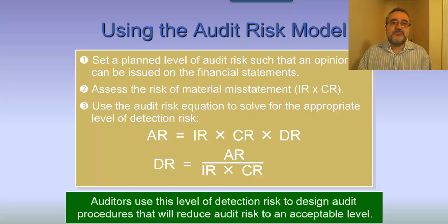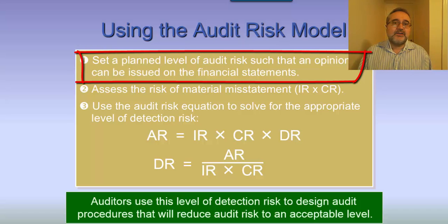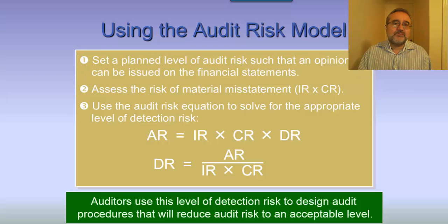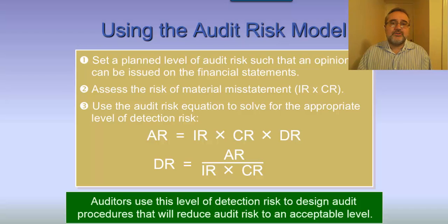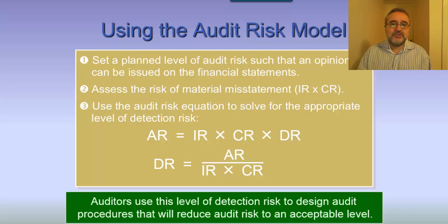From the audit risk model, what we are interested in doing is setting a planned level of audit risk such that an opinion can be issued on the financial statements. We are initially assessing the risk of material misstatement through inherent risk and control risk, and we use the audit risk equation to solve for the appropriate level of detection risk — understanding the relationship between inherent risk, control risk, and detection risk as it relates to audit risk.